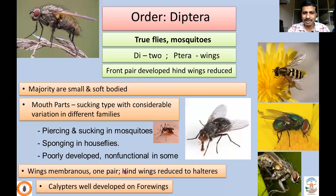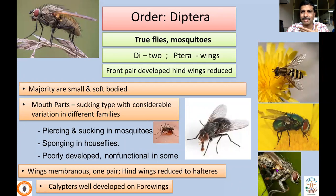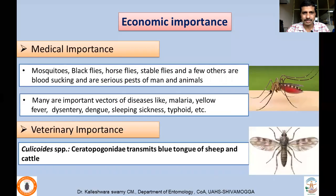Wings are usually membranous — only the front pair is well developed — while the hind wings are reduced to halteres. Below the lobe-like structures called calypters, which are parts of the forewings, there are two calypters: an upper calypter and a lower calypter, and these are very well developed in some families.